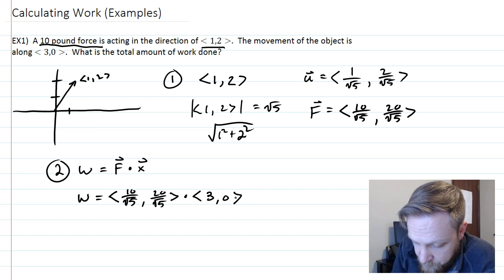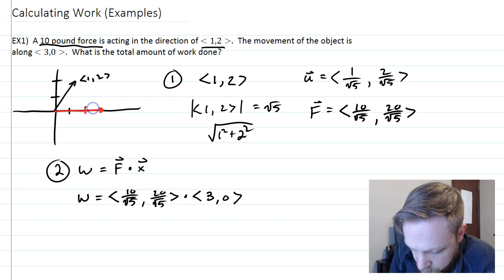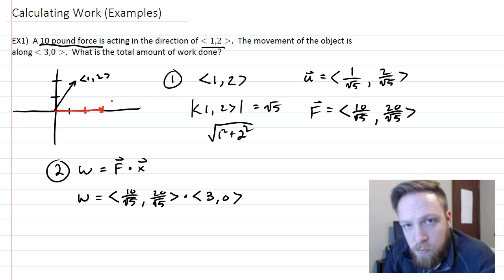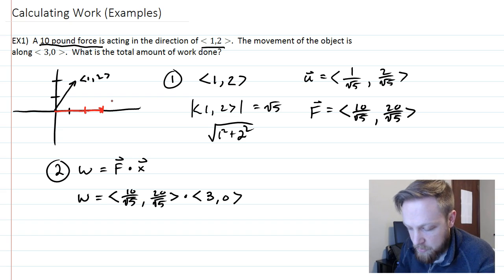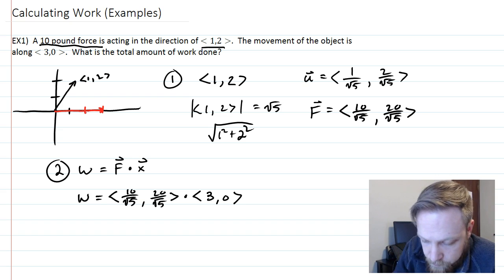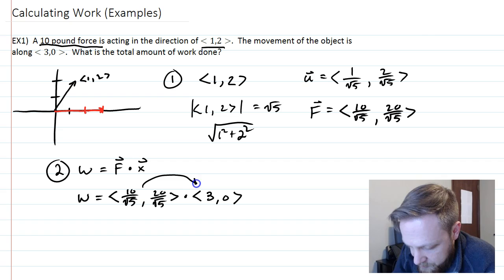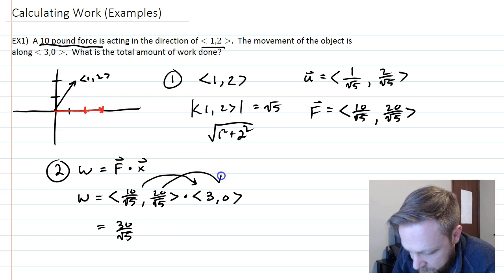We have this weird situation where the object is moving 3 forward but the force is not moving directly with the movement. The force is pushing kind of at an angle, so some of the force is going to be lost when we're calculating work. So 10 times 3, that will be 30/√5, and 20 times 0 will be 0.